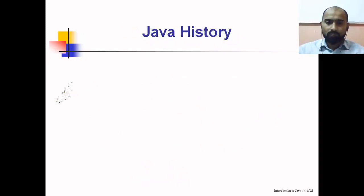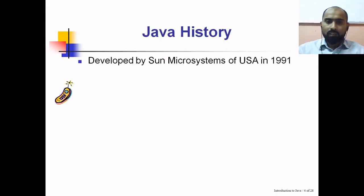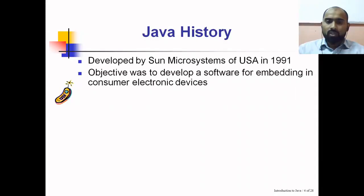Next is the history of Java. Java was developed by Sun Microsystems of the USA in the year 1991. It was developed under a project named the Green Project, headed by James Gosling. James Gosling is also called the father of the Java programming language.